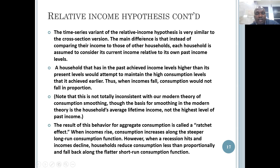The time series variant of the relative income hypothesis is very similar to the cross-section version. The main difference is that instead of a household comparing its income to other households, it compares its current income to its own past peak income.